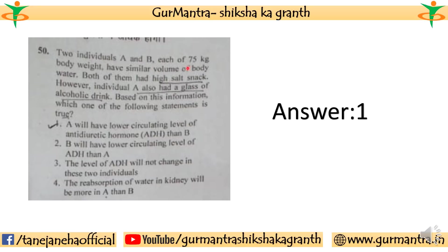Question 50: Two individuals A and B, each of 75 kg body weight, have similar volumes of body water. Both had a high-salt snack; however, individual A also had a glass of alcoholic drink. Which of the following statements related to antidiuretic hormone (ADH) is true? The correct answer is the first one — A will have a lower circulating level of ADH than B.